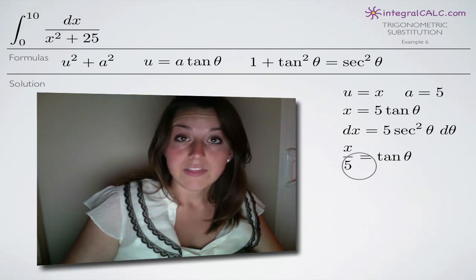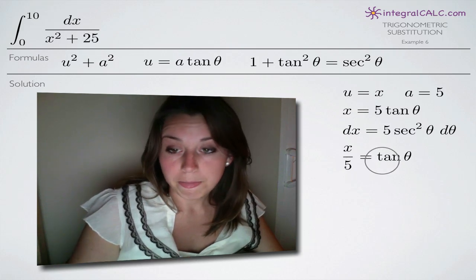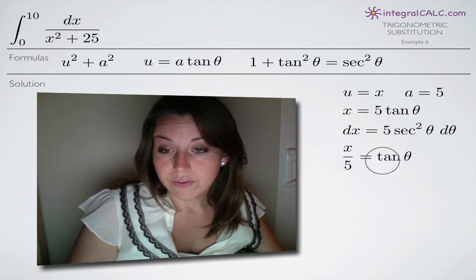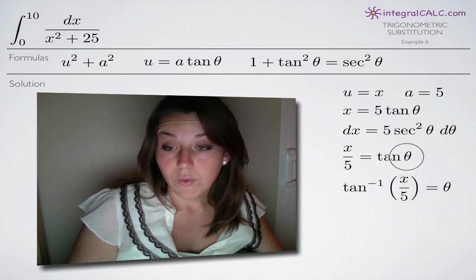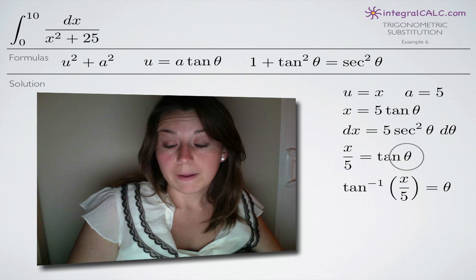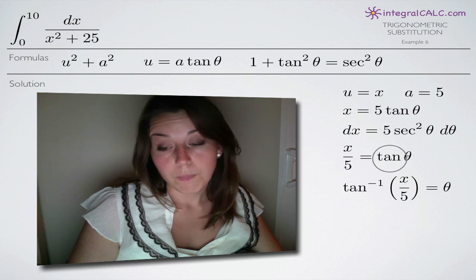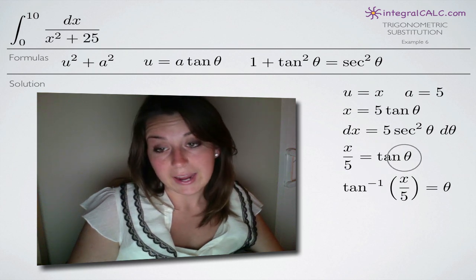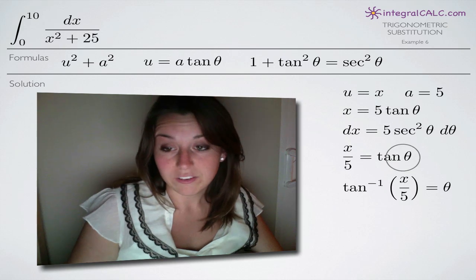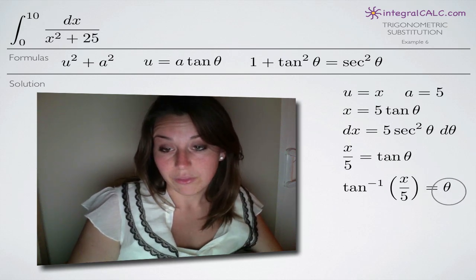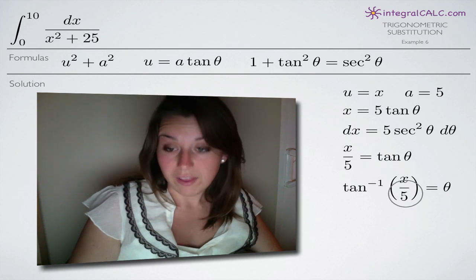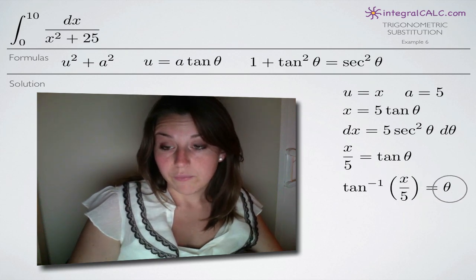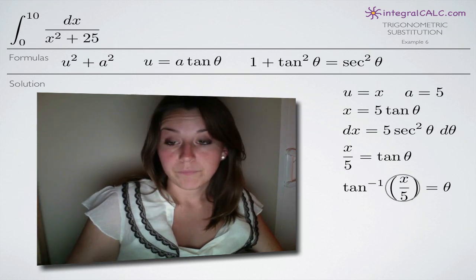We're doing all of these pieces because they'll help us later. If we set everything up at the beginning, we can just grab these pieces when we need them. We have tangent of theta equals x over 5, and now we solve for theta by taking tangent to the negative 1 of both sides. Tangent inverse and tangent cancel on the right side, leaving theta equals tangent to the negative 1 of x over 5, which we'll plug back in at the end.